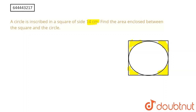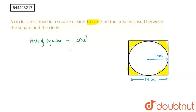This is the area we need to find, highlighted with the yellow highlighter. Here the side is equal to 14 centimeters, so my radius will be equal to 7 centimeters. Therefore, the area of the square is equal to side squared — 14 squared — which is equal to 196 centimeter square.